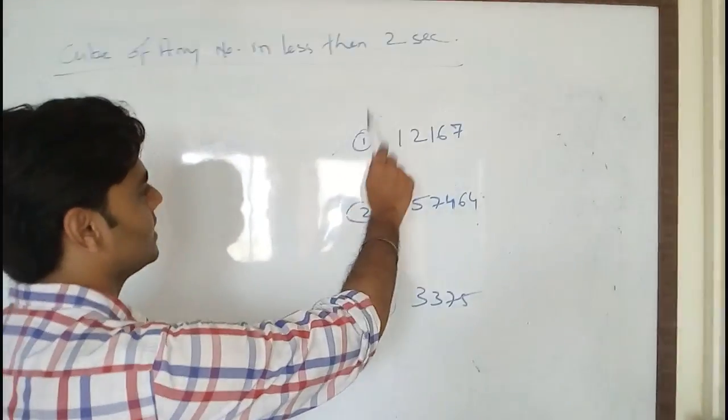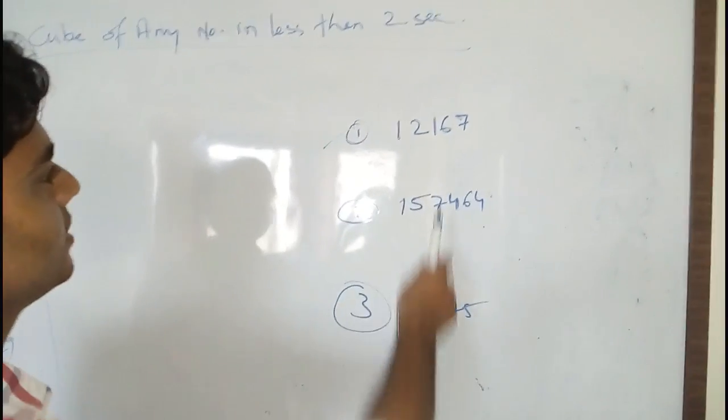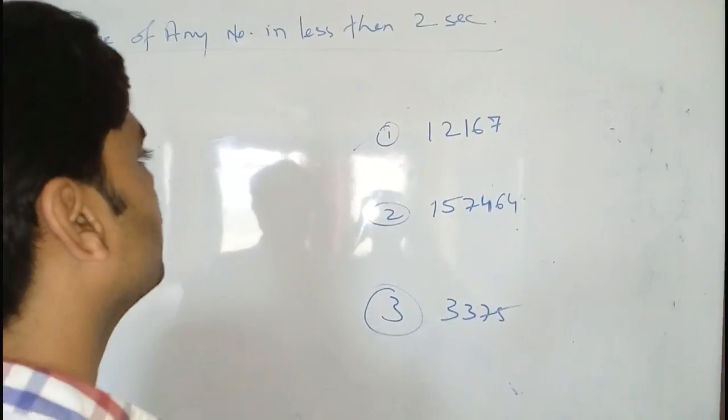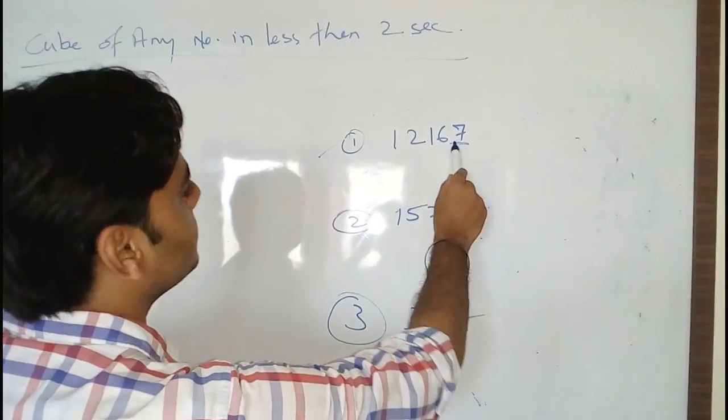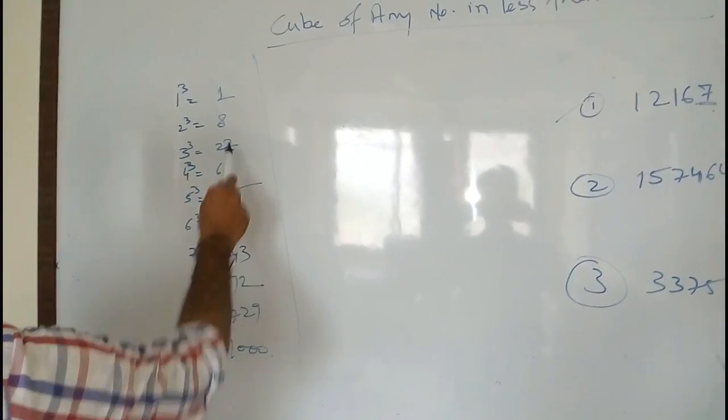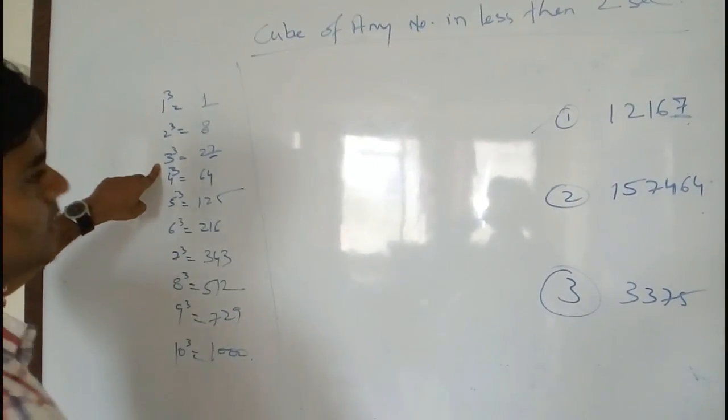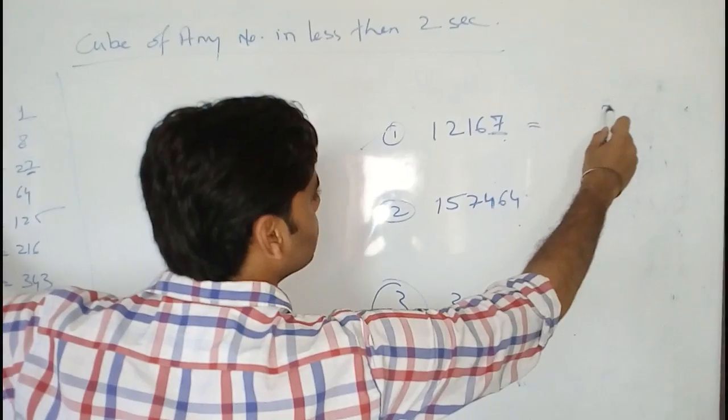So this is our first example. We are required to find the cube root of 12167. So first step is we unit this. Here in seven and here in seven, so the answer's unit place is 3.